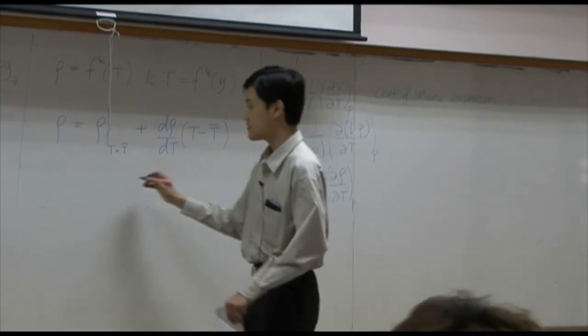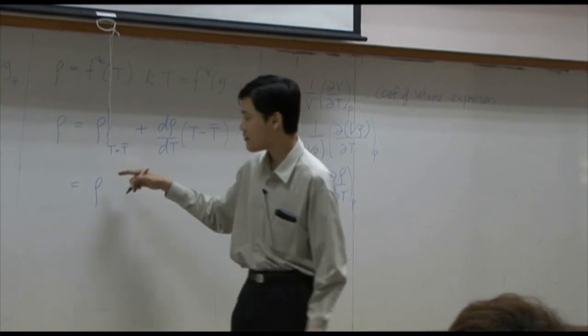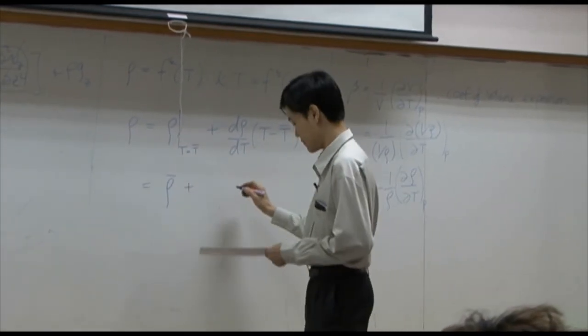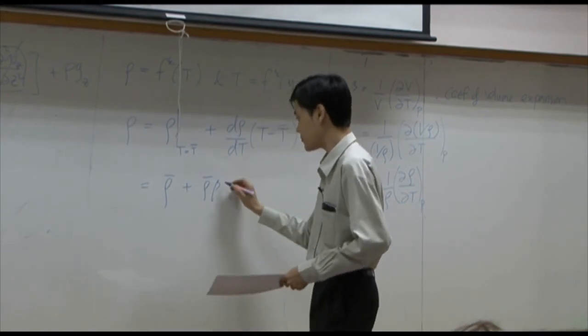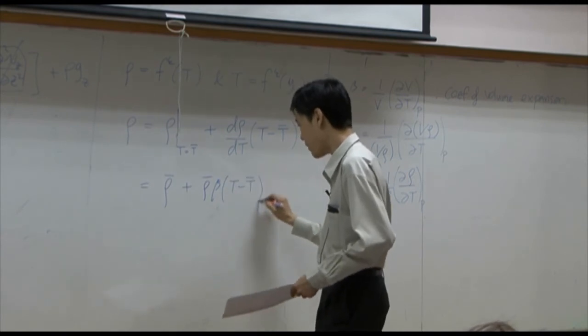So I am going to take this. I am going to call this one average density plus d rho by dt, plus another average density times beta times T minus t bar.